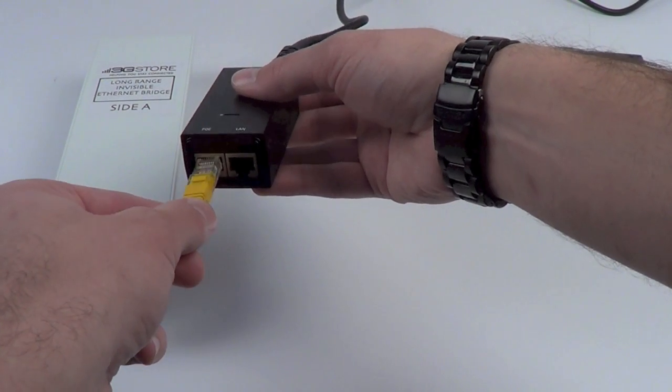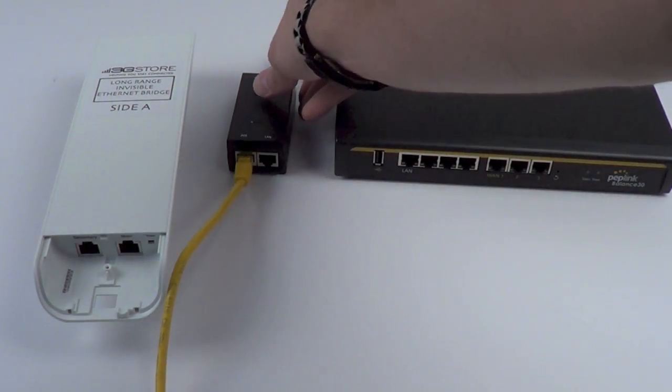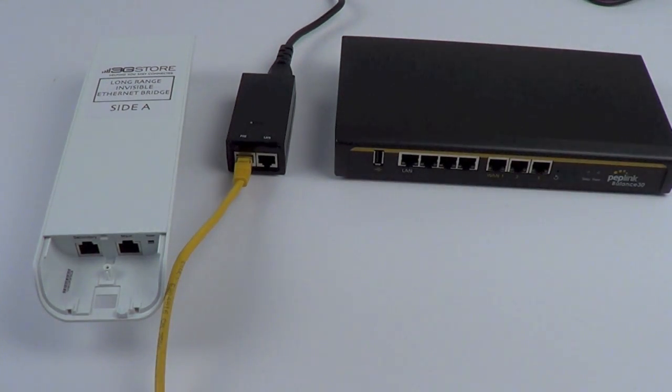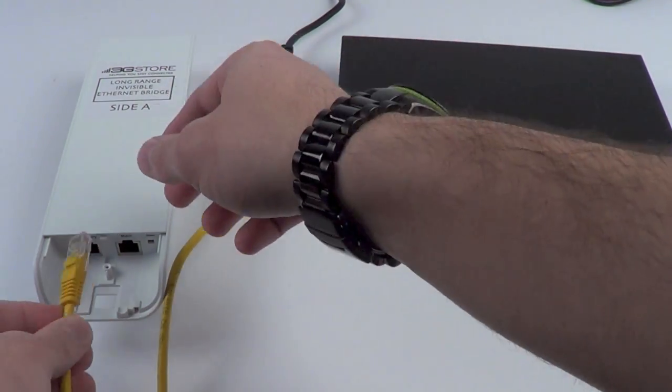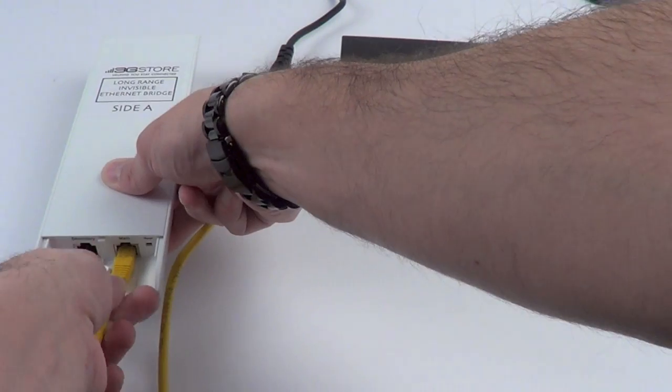You're going to connect the PoE side into an Ethernet cable that runs to your antenna. Your off-the-shelf Cat5 cable will work perfect for powering the antennas, however, if you'll be installing these in more extreme environments, you may want to consider an outdoor cable.